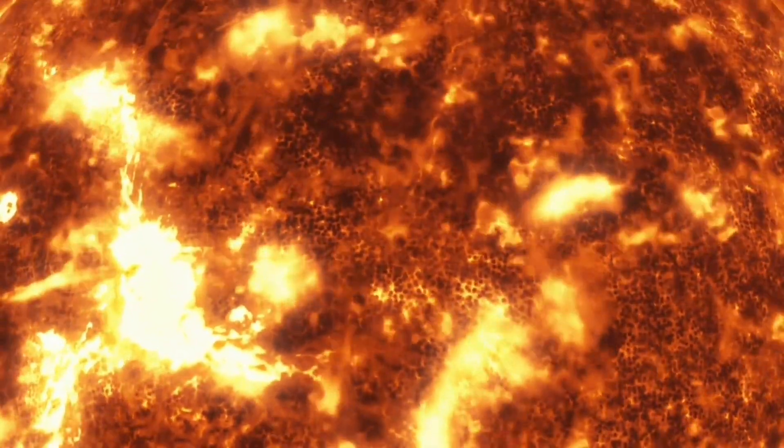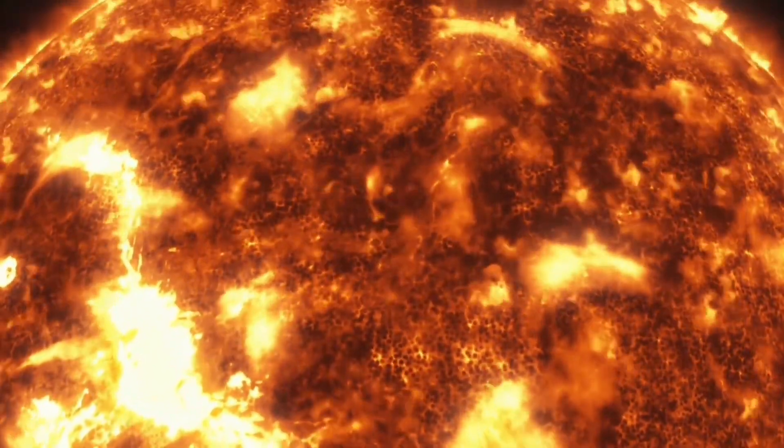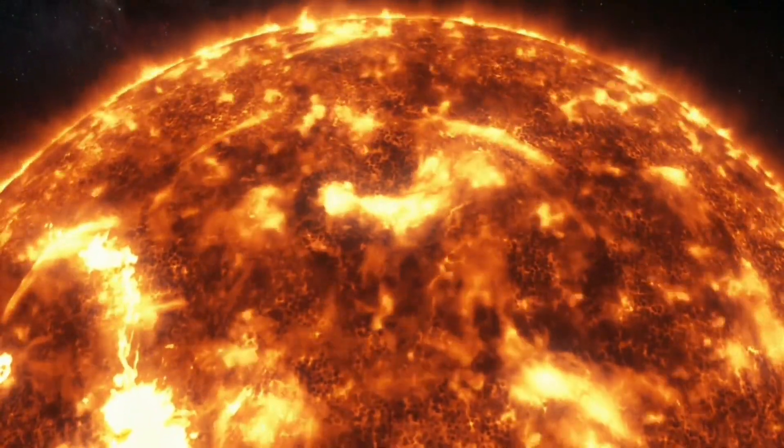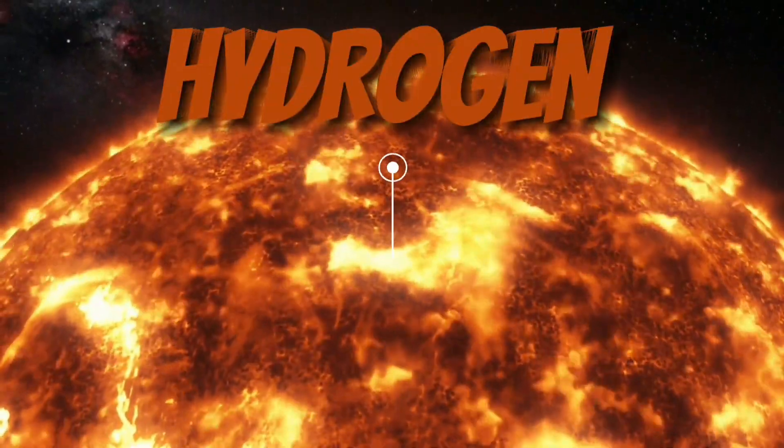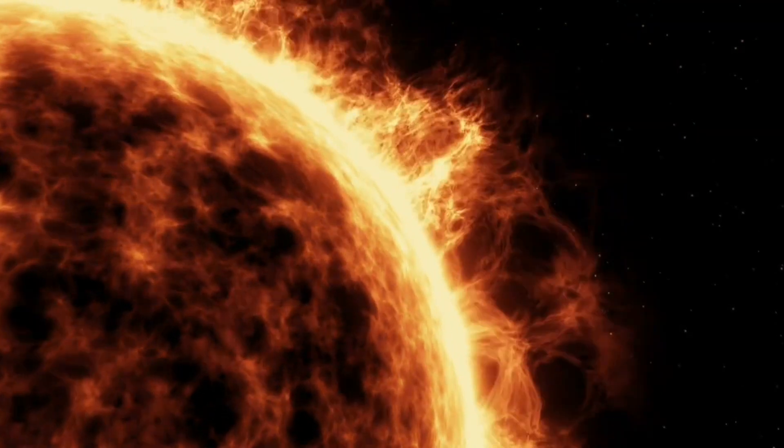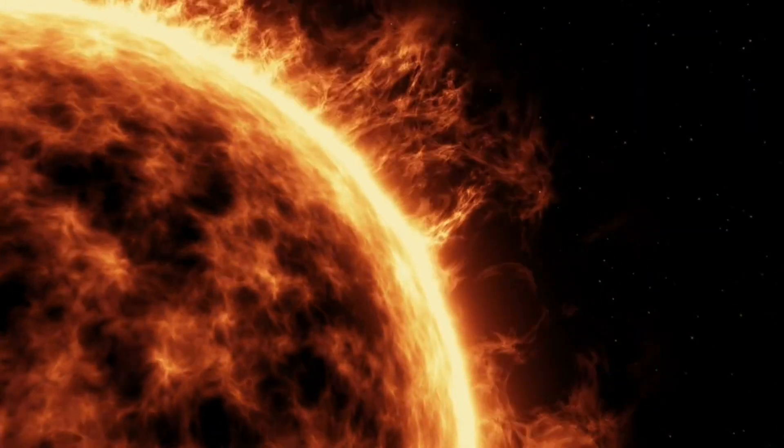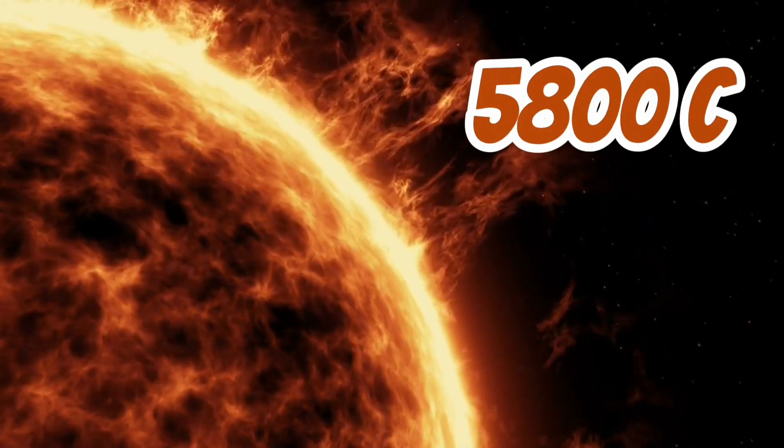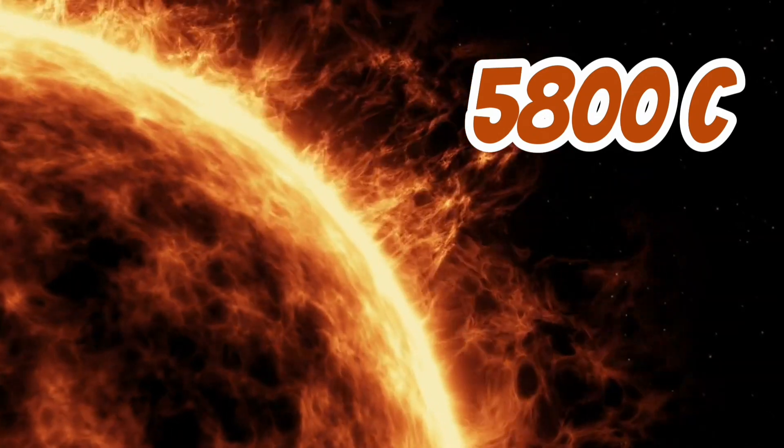It shines so brightly and generates enormous energy because there are atomic reactions which turn the hydrogen into helium. To give you an idea, the surface temperature on the sun is 5,800 degrees Celsius.